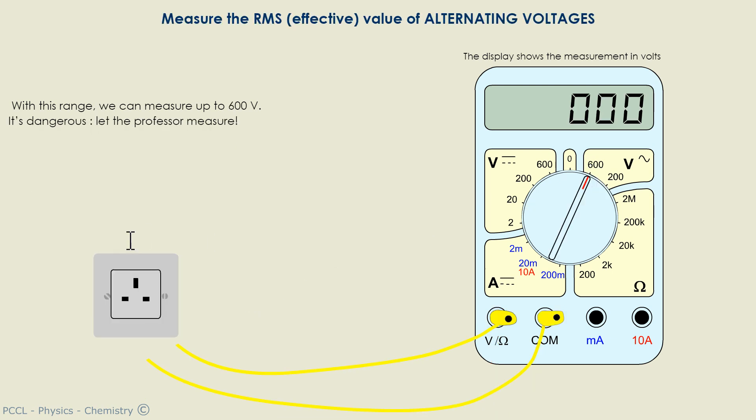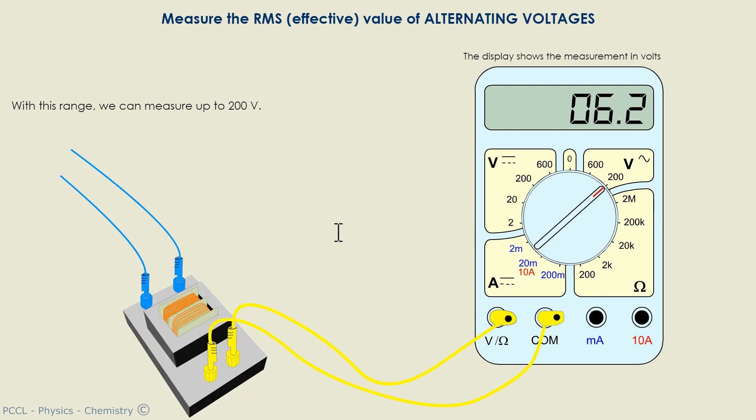We can measure alternating voltages such as the mains voltage, for example, or the voltage across a transformer like here.